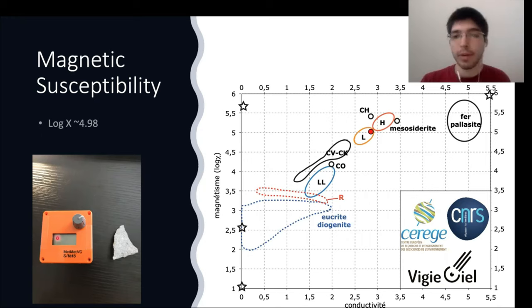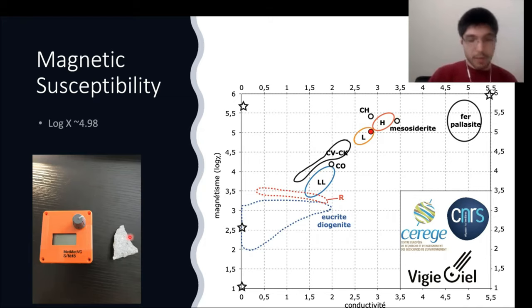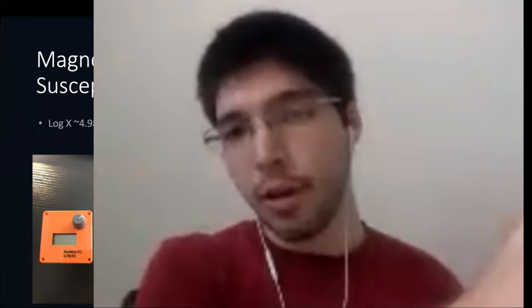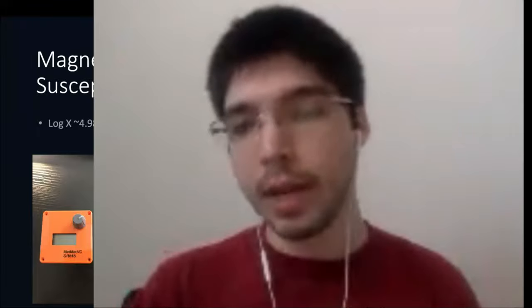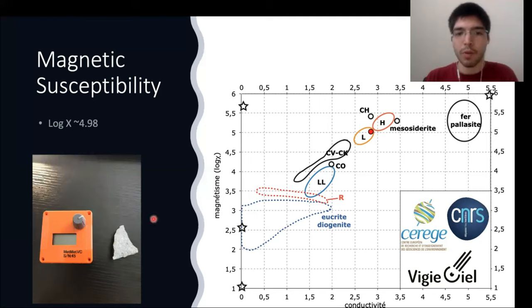Before looking at the chemistry, let's check magnetic susceptibility. I'm fortunate to own a magnetic susceptibility meter — I call it 'the pumpkin' because it's orange. You hold it against the sample, click it, take an air background measurement without the sample, then measure the sample and normalize by mass — about 20 grams in this case. This gives me magnetic susceptibility reported as log χ, plus electrical conductivity. This plots right within the L group in terms of magnetic susceptibility.